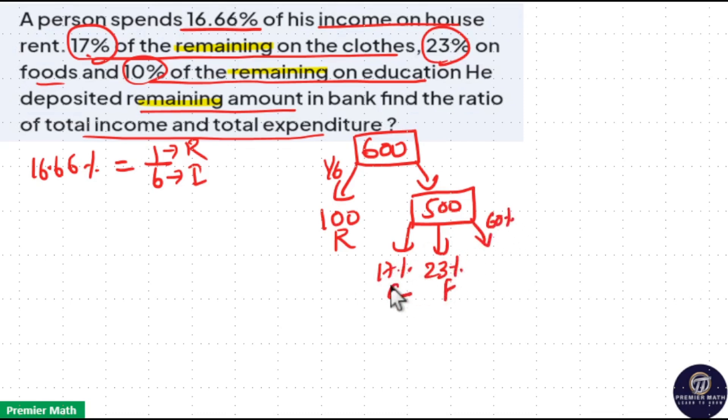17 plus 23 equals 40%, remaining is 60%. That is here 40% of 500 he spent on cloth and food, and remaining 60% means 10% of 500 is 50, then 60% is 6 into 50, which is 300 rupees.